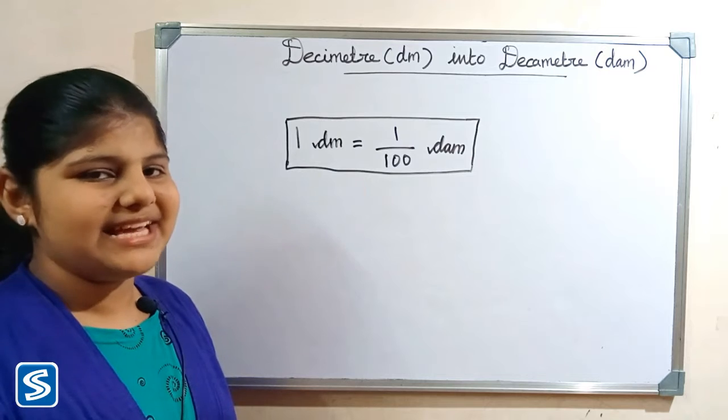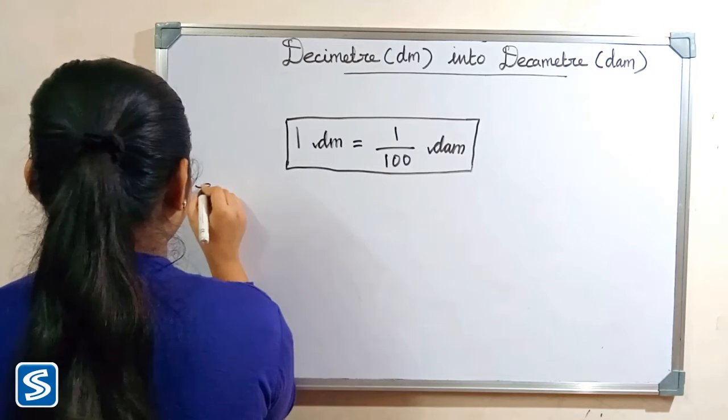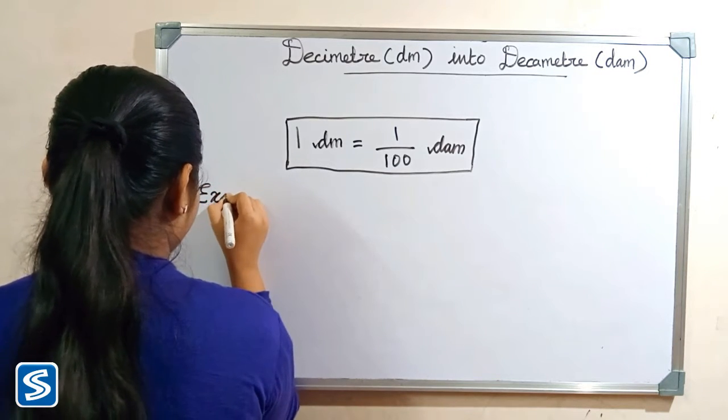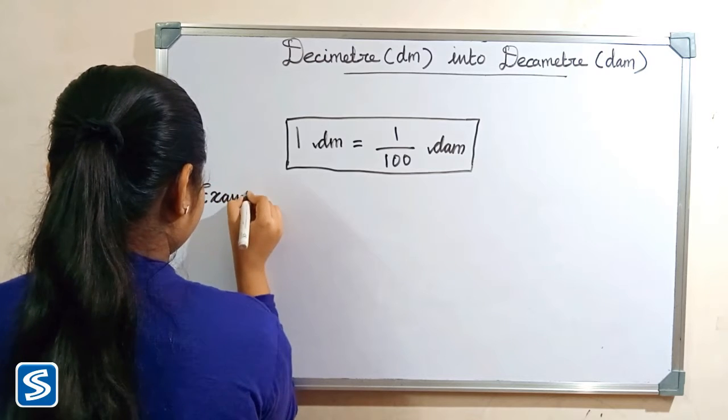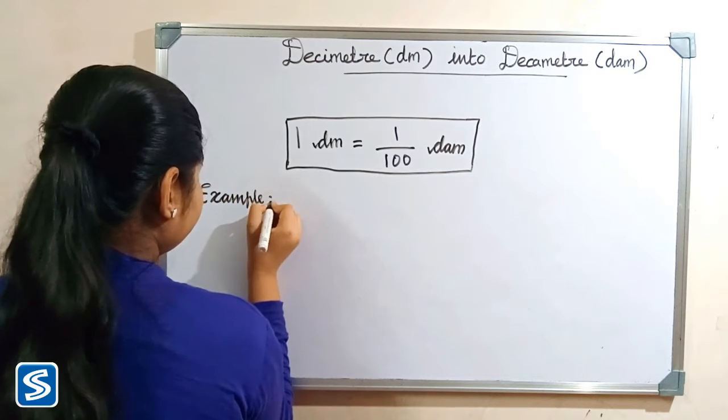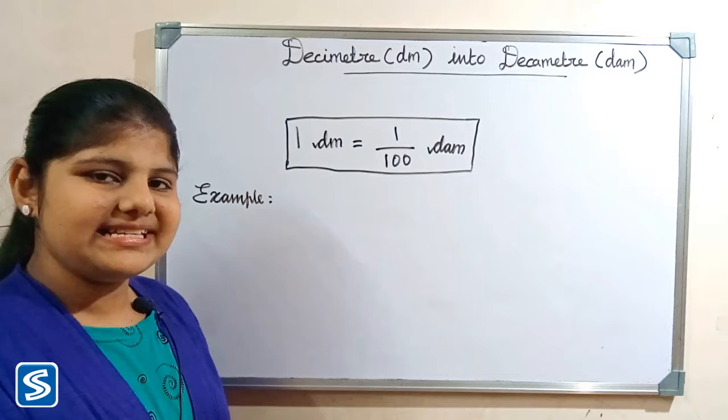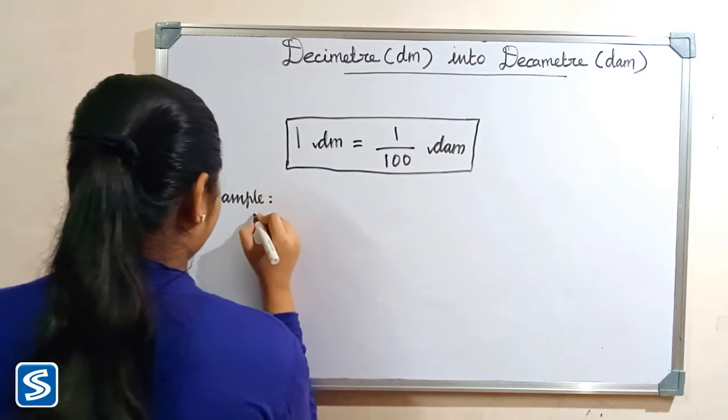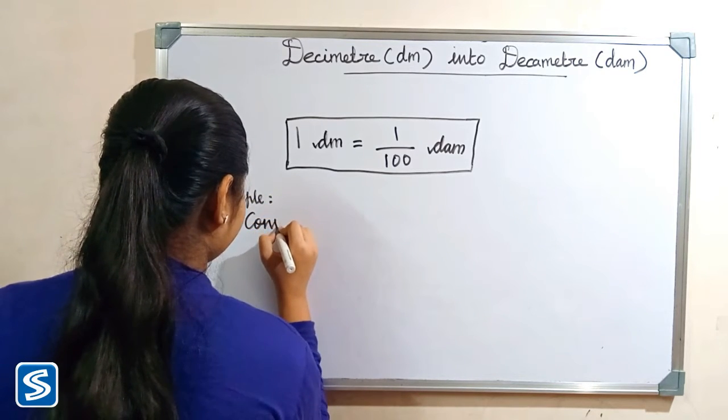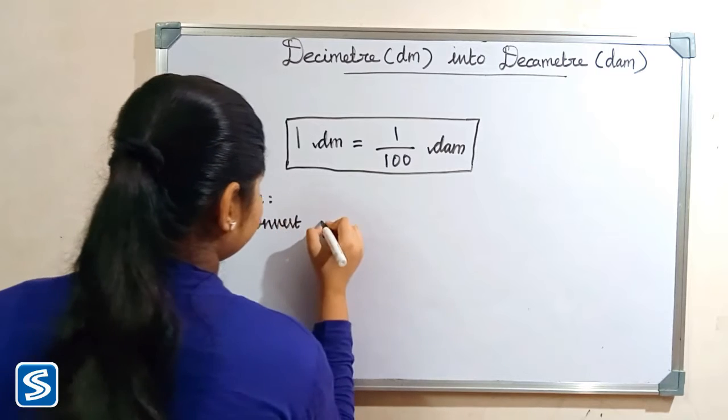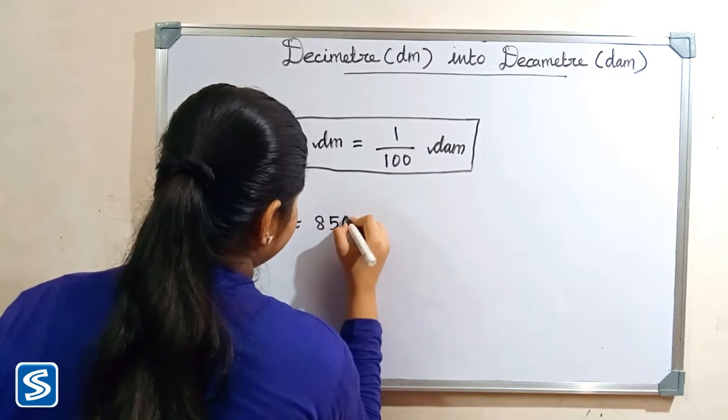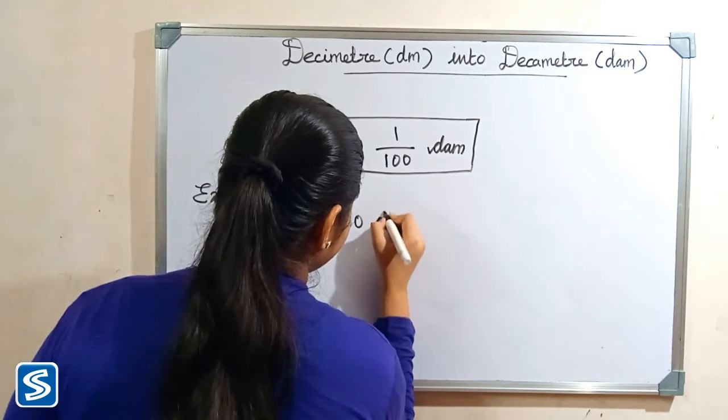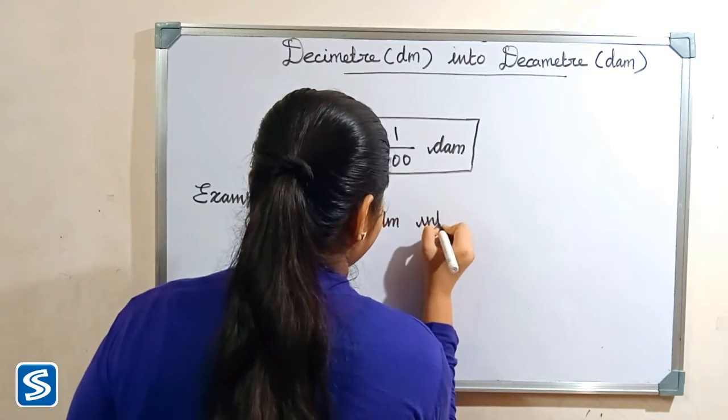Now we will take some examples. For example, convert 8500 decimeter into decameter.